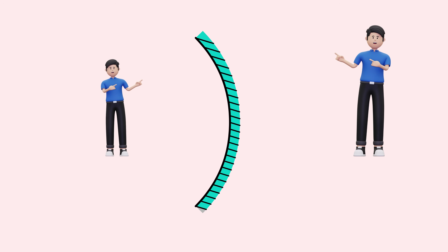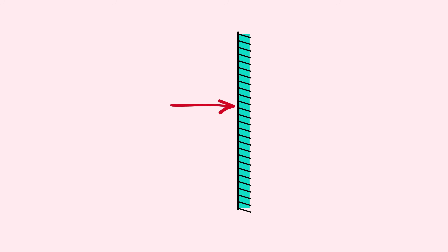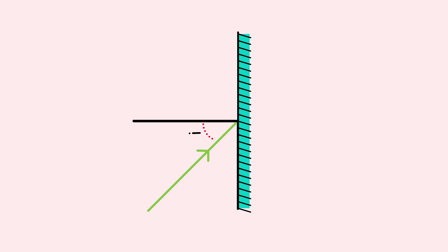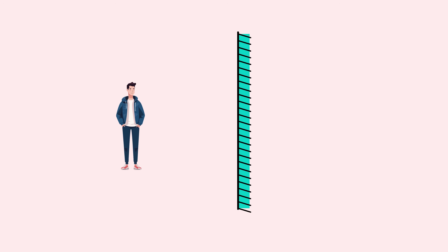Before we enter the world of concave mirrors, let us first recall what a plane mirror does. A plane mirror has a reflective part and a hard protective layer. Light reflects through the reflective part such that the angle of reflection equals the angle of incidence. If a person stands in front of a plane mirror, the image formed appears behind the mirror, perfectly upright, virtual, and equal in size to the real person.